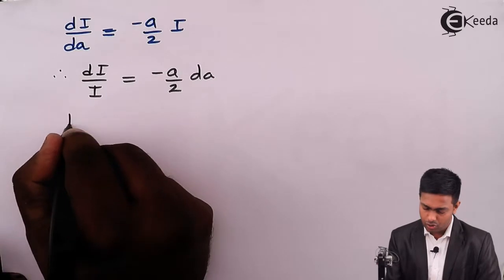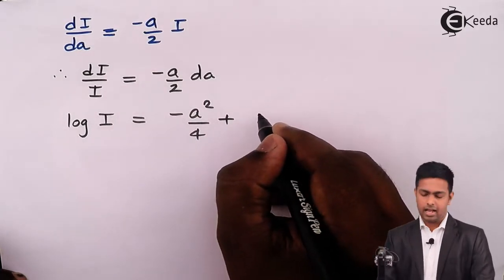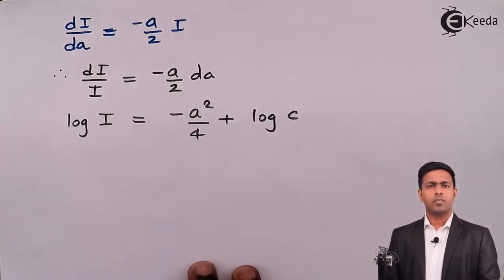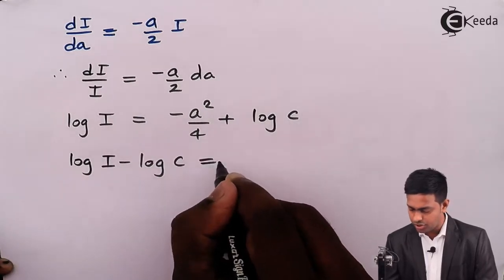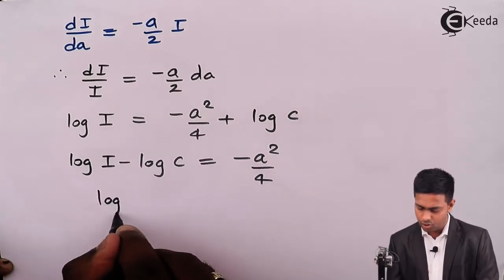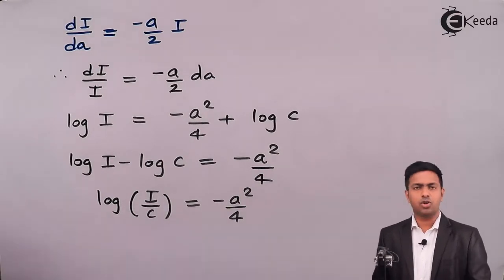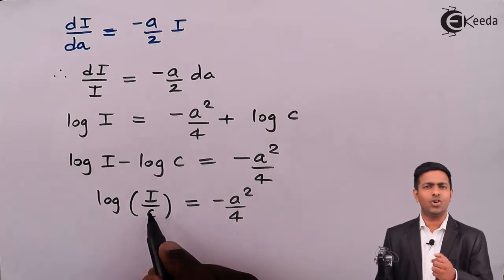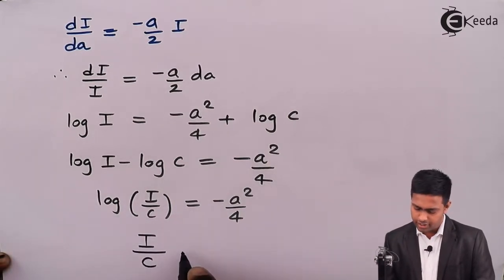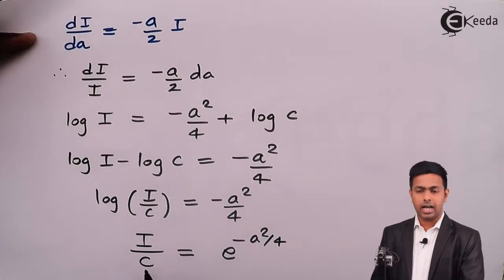Integrating both sides gives log(I) = minus a²/4 + C. Since we have a log, we write C as log(C). Taking log(C) to the left: log(I) minus log(C) = minus a²/4, which is log(I/C) = minus a²/4. Removing the log by taking exponential on both sides: e and log cancel, giving I/C = e^(-a²/4), so I = C · e^(-a²/4). We write this as I(a) = C · e^(-a²/4) — this is equation 2.